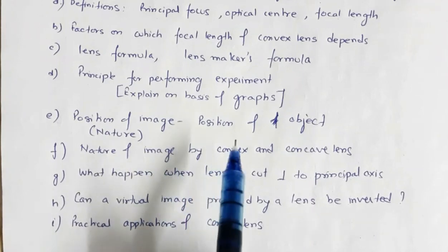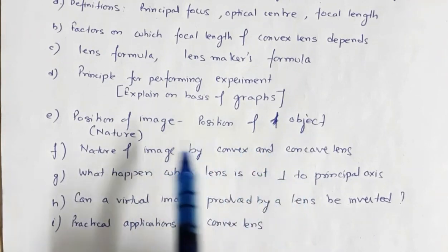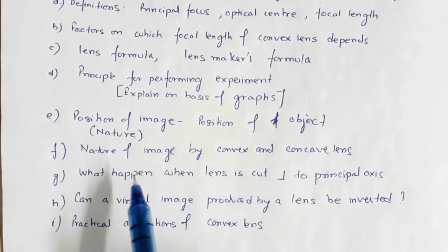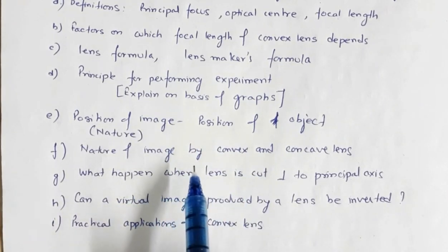They may ask you like if for a particular position of the object, what will be the position of the image and the nature of the image? Then, what is the difference between the nature of image formed by convex and concave lens.